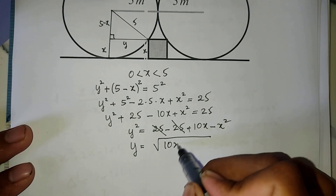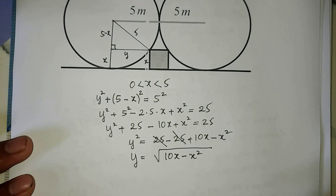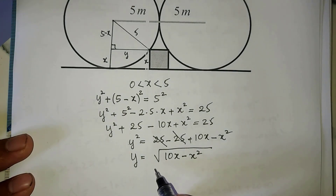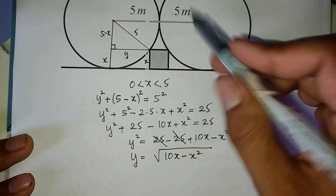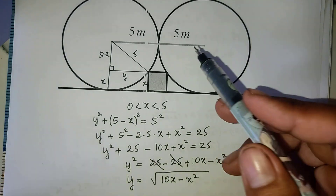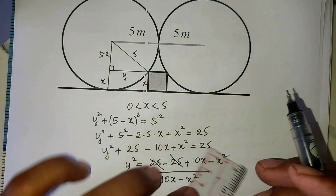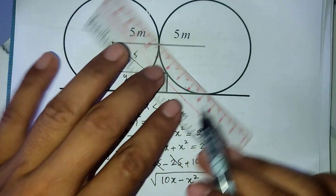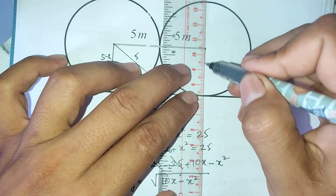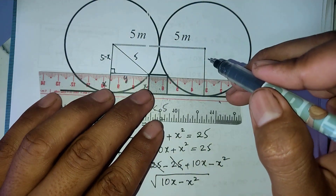So y equals the square root of 10a minus a squared. Now we know the value of y in terms of a. If we draw this out on the figure, we can use this result in our substitution.